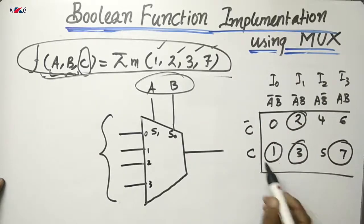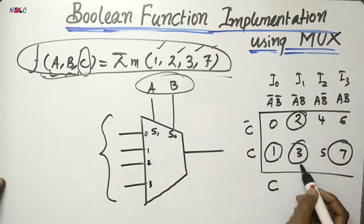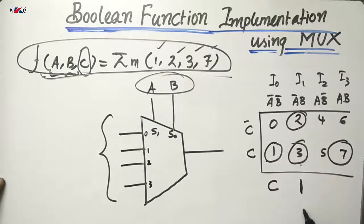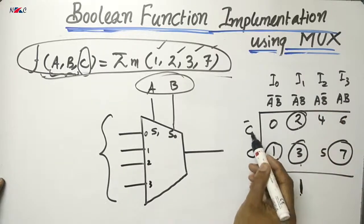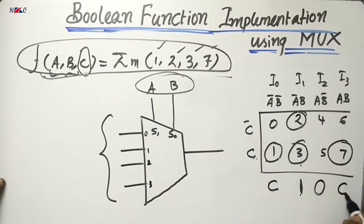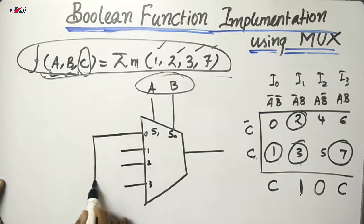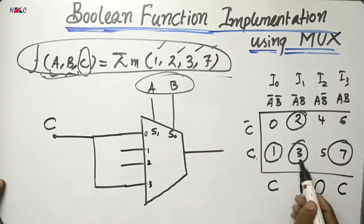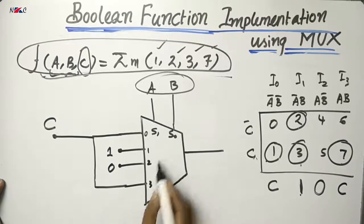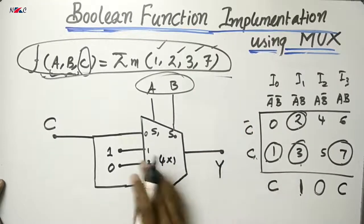Analyzing the table column-wise: I0 = 0, I1 = 1, I2 = 1, and I3 = C. So I0 equals 0, I1 equals 1, I2 equals 0, and for the column corresponding to min term 7, I3 = C. This is the implementation of the function using a 4-by-1 multiplexer.